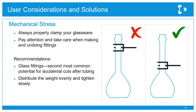When using jointed ware or doing any sort of clamping, it's really important to ensure the vessel is clamped correctly. Having the clamp near the base of the flask is less likely to stress the neck. We also need to pay attention to fittings — after tubing, the many different types of glass fittings present the next biggest potential for accidental cuts, from barbed glass nipples to ground glass joints. Take care when making and also undoing connections.